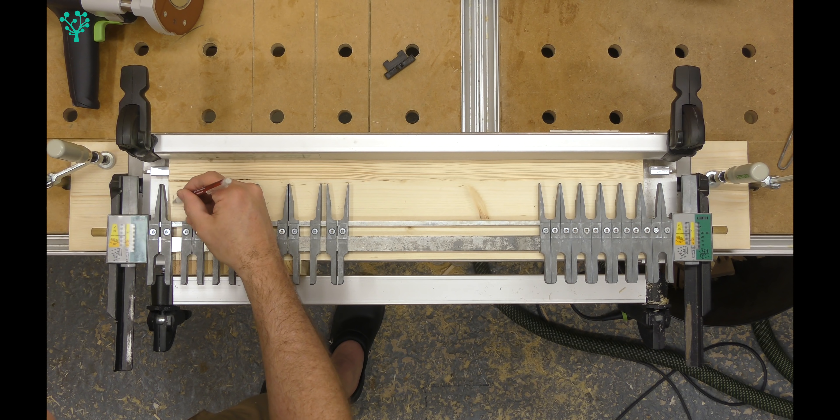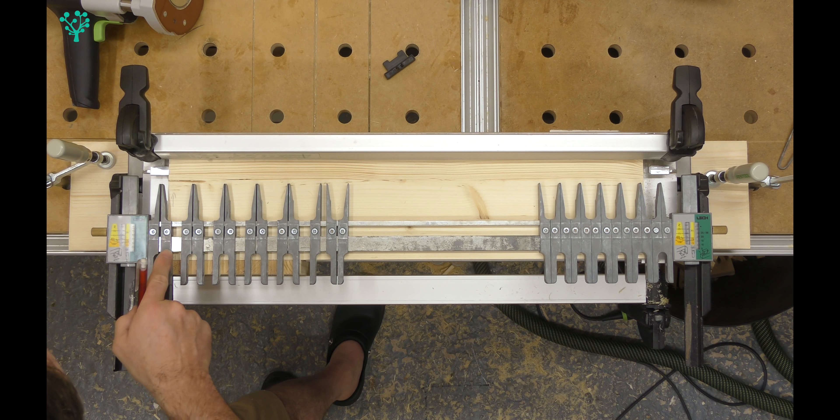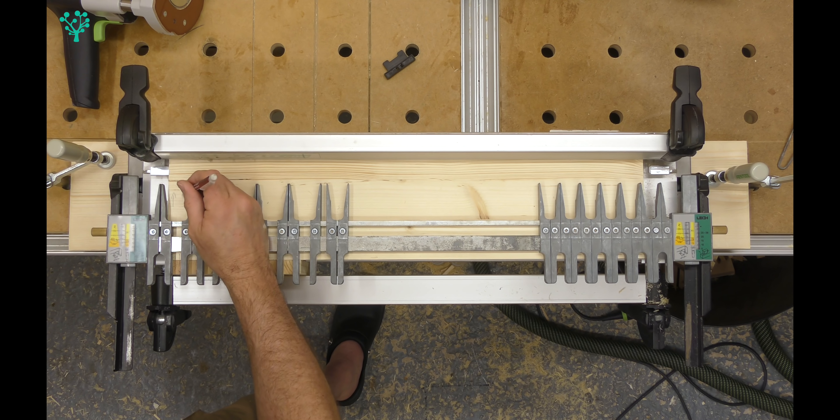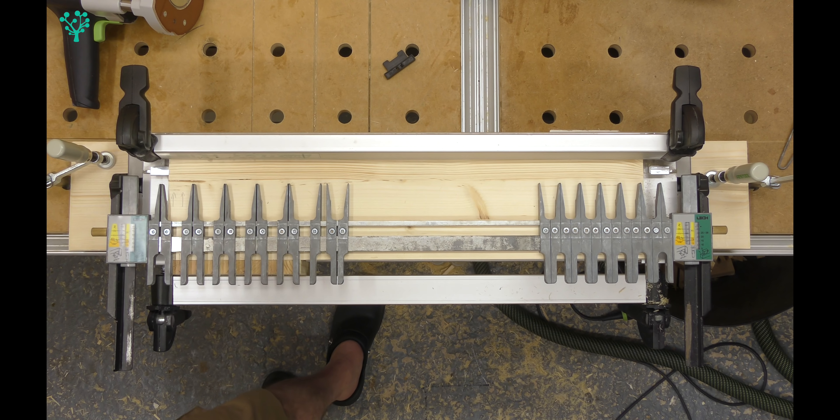What you want to do instead is route in that direction against this finger. When the bush hits this part here or this part here, bring it straight back out, resting against this finger. Then move it over and then route that.